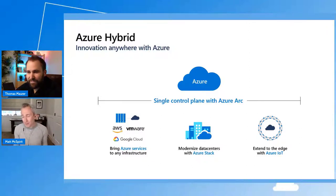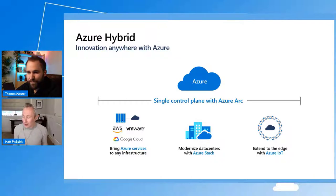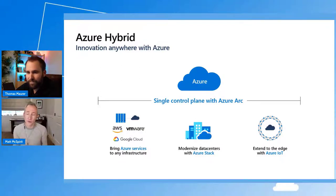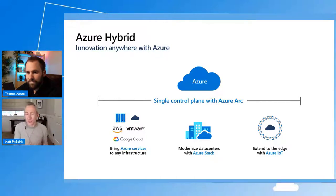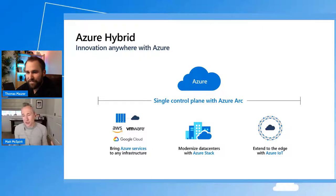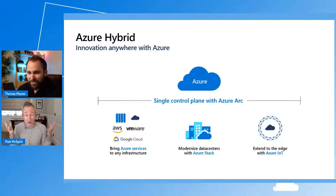With Azure Arc, not only are we providing a layer of control in Azure to surface your non-Azure resources for management, policy, and governance, but we also allow you to bring Azure services down to environments that aren't Azure. For instance, we could push data services to an AWS Cloud, or bring servers running in Google Cloud into Azure management. It's innovation anywhere with Azure — a great reflection of everything we're doing in the hybrid space.